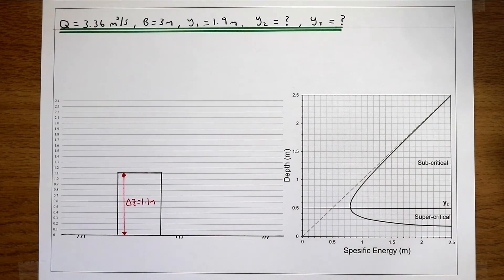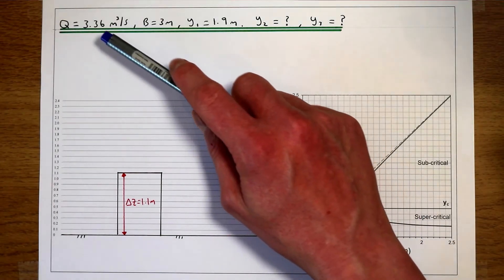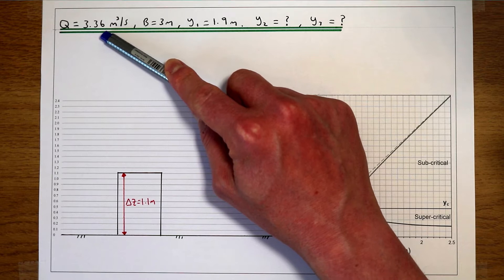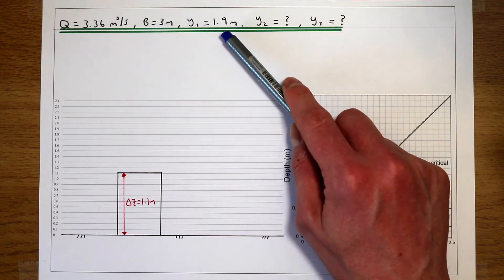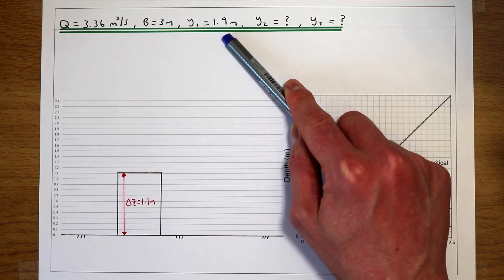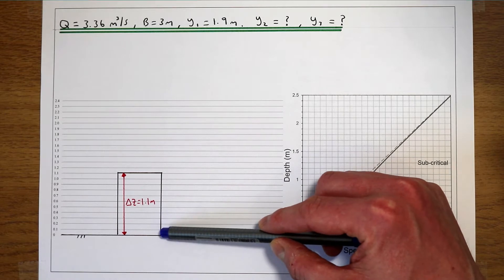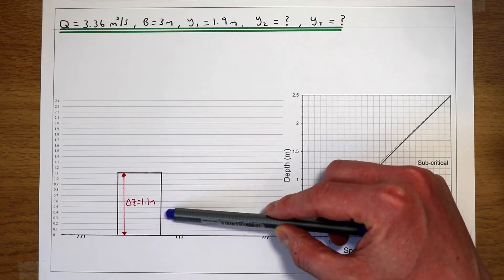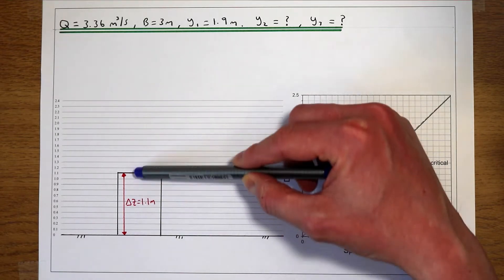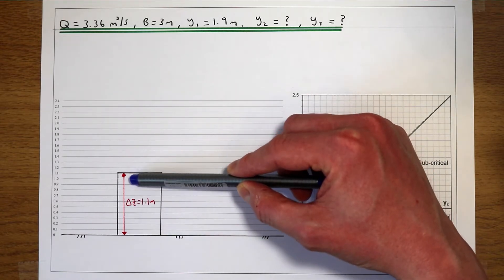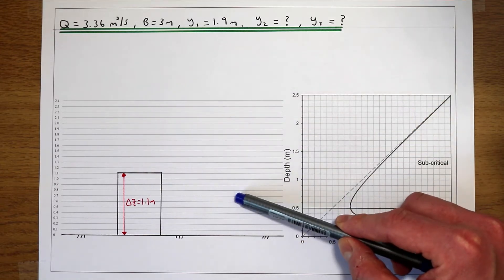This video follows on from the previous video. We've got the same initial flow conditions: 3.36 metres cubed per second going down a river that's 3 metres wide, and the initial flow depth is 1.9 metres. The difference is that in the previous video we put a bump in the river that was 0.3 metres high, and in this video we've got a much larger bump that's 1.1 metres high. We're going to see what that does to the flow depth over and after the obstruction.